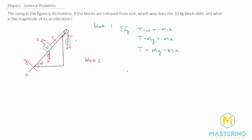Now for block two, we sum the forces in the x direction using the tilted axis. We have positive tension, and then the x component of gravity — which, as covered in chapter three on incline plane problems, acts opposite to the angle. Since it points in the negative x direction, we subtract it: T minus m2·g·sin(θ) equals m2·a.